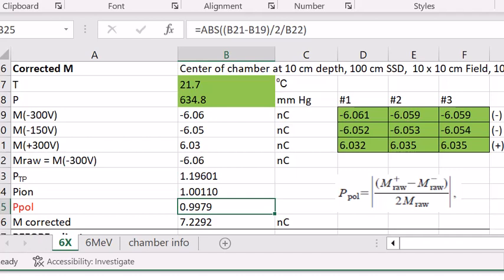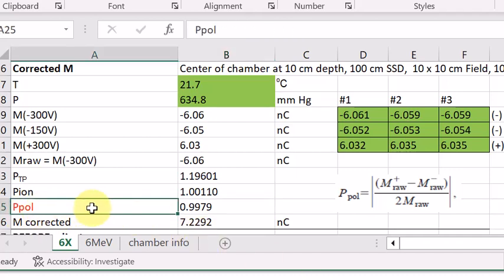And for this particular example, 0.9979 or around 99.8%, this means our chamber biased at negative 300 and positive 300 will make about 0.2% difference in reading. And this is corrected by this P-polarity factor.